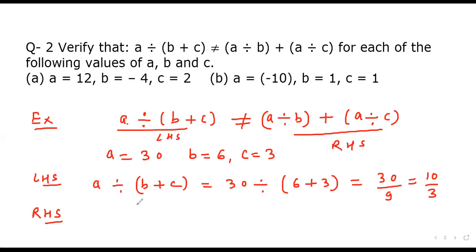Now let's take RHS. A divided by b plus a divided by c, equal to a is 30 here, so 30 divided by b. B is 6, so that will give 30 divided by 6 will give 5, and plus 30 divided by c. C is 3, so that will give 10. So this will give 5 plus 10 which is 15. In LHS we have got just 10 by 3, and here in RHS we are getting 15.